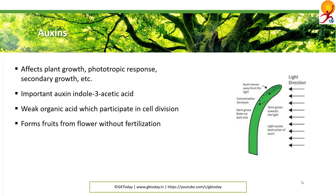If some auxin hormones are applied on the flower of the plants, then without fertilization and without seeds being formed, the ovary wall becomes tuberous and forms the fruit. This is known as artificial parthenocarpy.